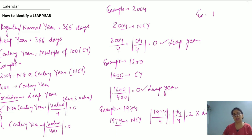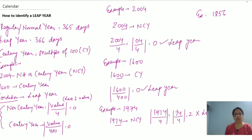Let's try one more example: 1856. The last two digits are 56, which is not a multiple of 100, so it is not a century year. Divide 56 by 4 and share the answer in the comment box — whether 1856 is a leap year or not. If you have any doubts, let me know. If you liked the video, please like, share, and subscribe. Thanks a lot!